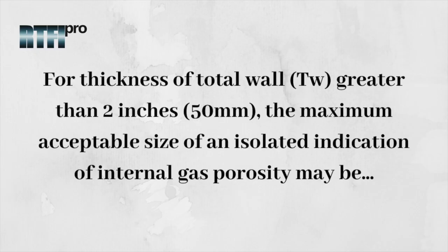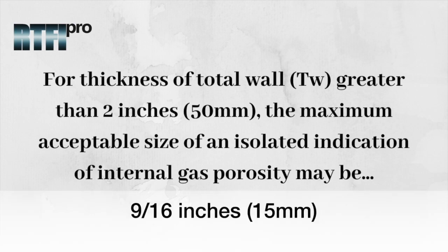Two: for thickness of total wall greater than two inches or 50 millimeters, the maximum acceptable size of an isolated indication of internal gas porosity may be nine-sixteenths of an inch or 15 millimeters.